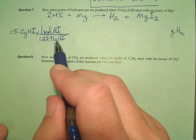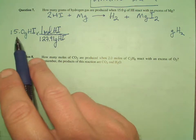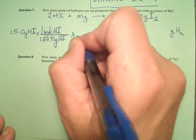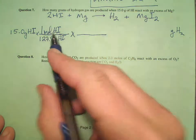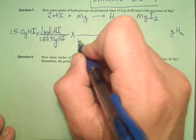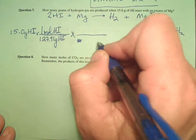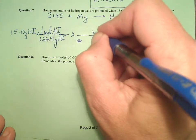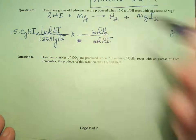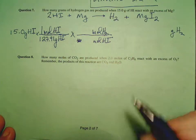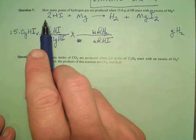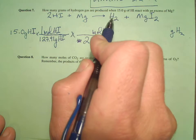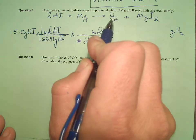Remember, that's always the first step — get it into moles. Regardless of the units you have in a stoichiometry problem, get it into moles unless it's already in moles. Now I'm ready to use my mole-to-mole ratio. Moles of HI goes on the bottom, and since we're headed to H₂, moles of H₂ goes on the top. Two moles of HI react to produce one mole of H₂.